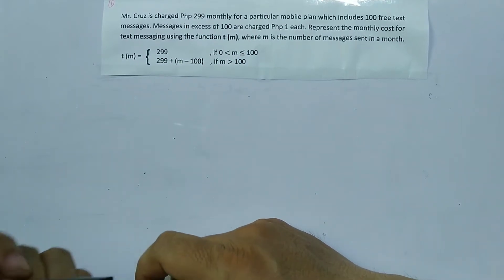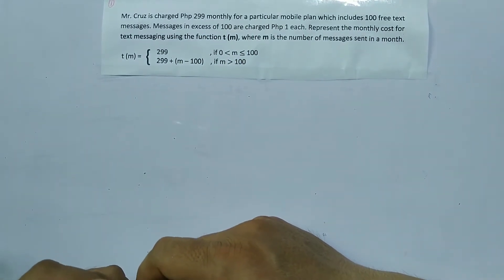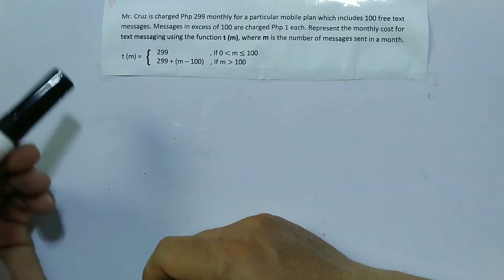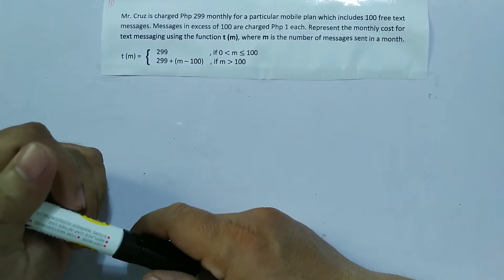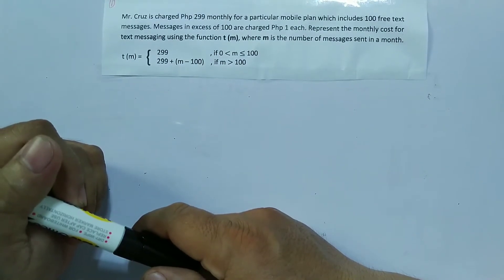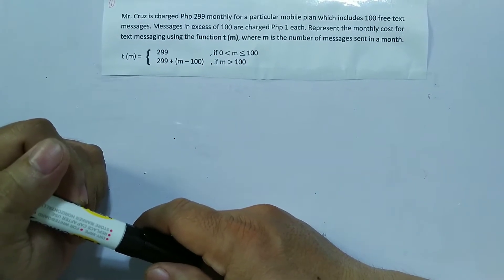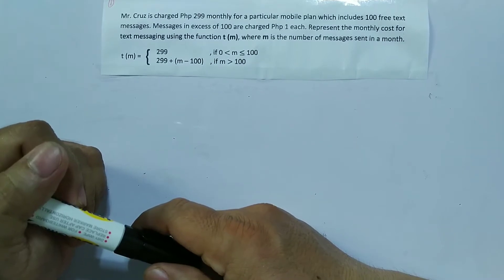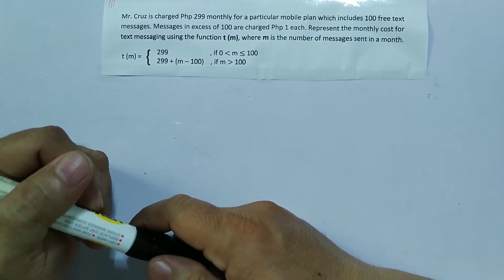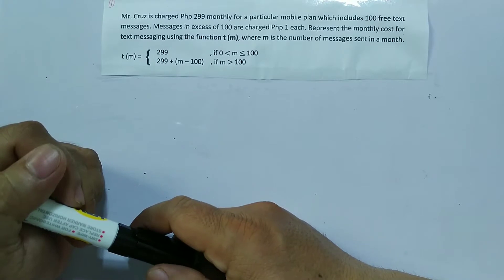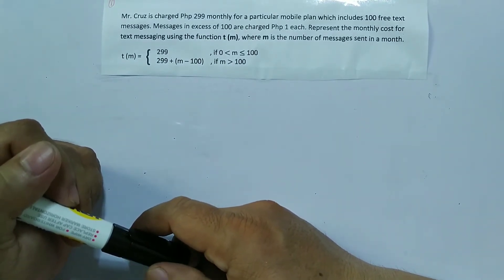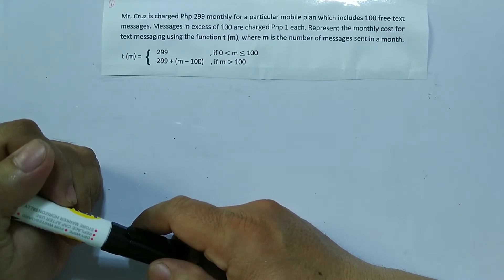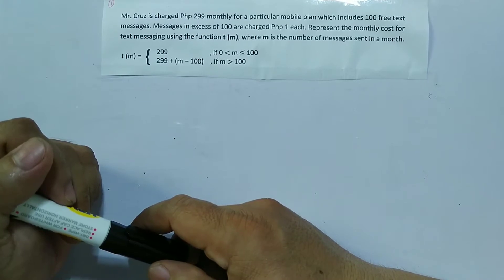Let's have some examples where a piecewise function will be applied. Example number one: Mr. Cruz is charged 299 pesos monthly for a particular mobile plan which includes 100 free text messages. Messages in excess of 100 are charged one peso each. Represent the monthly cost of text messaging using the function t of m, where m is the number of messages sent in a month.